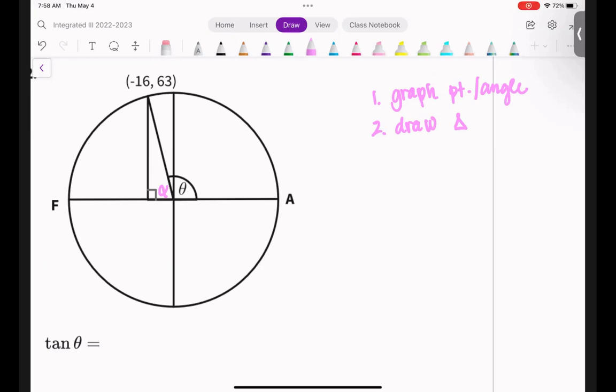And whenever you're drawing your triangle, you're always taking the elevator to your x-axis. Number three, this is where you have to start because they didn't do this for you, label your triangle. So when we label our triangle, we're labeling it based on the information that they gave us. Because they gave us that point, negative 16, 63, I know that this side is negative 16 because we go left 16 and we go up 63. So this side is going to be 63.